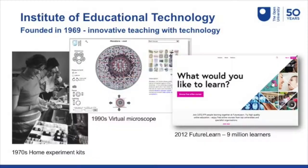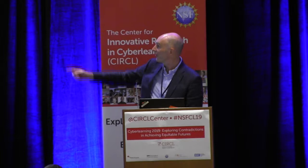I work at the Institute of Educational Technology, also founded 50 years ago, to support and research the practices of teaching and learning with technology. In the 1970s, because we wanted to engage people of all backgrounds in their own contexts, for science learning we sent out home experiment kits — we sent lasers through the post so students could develop their own holograms, and geology kits through the post. You can see a student there working with an Open University geology kit: rock samples and microscopes.